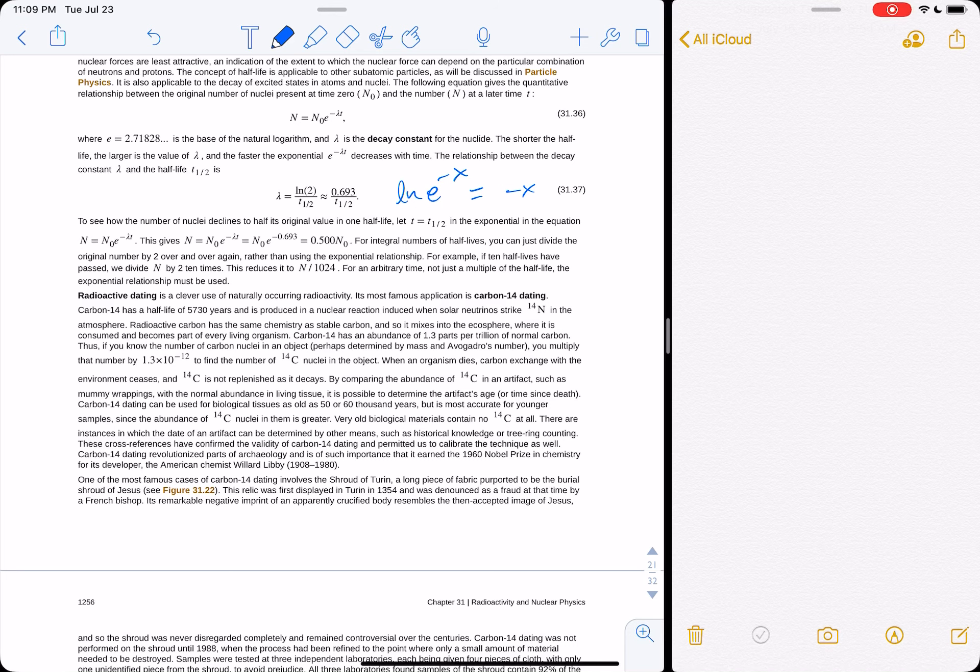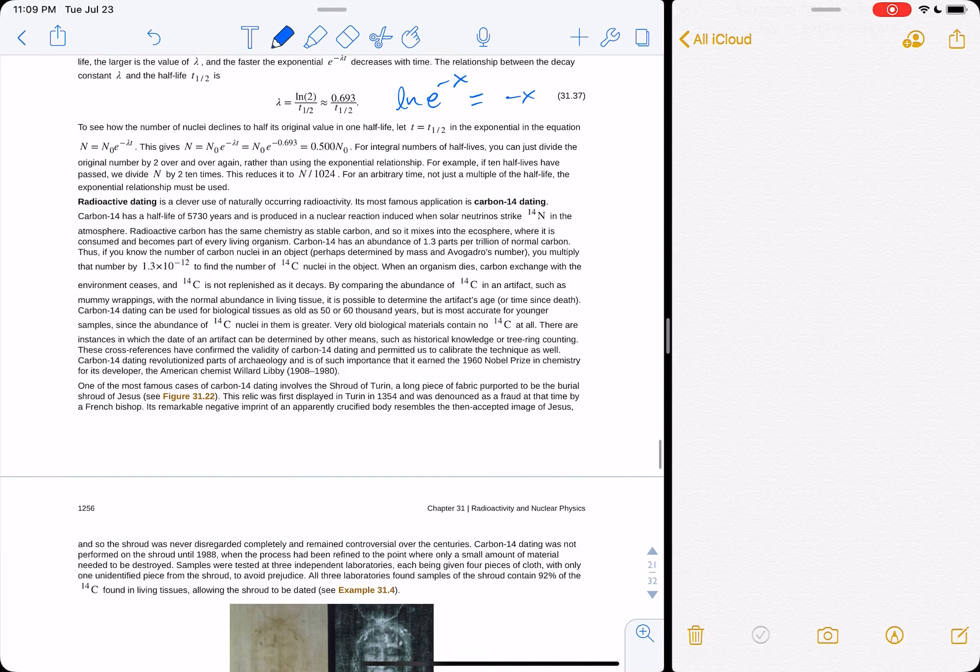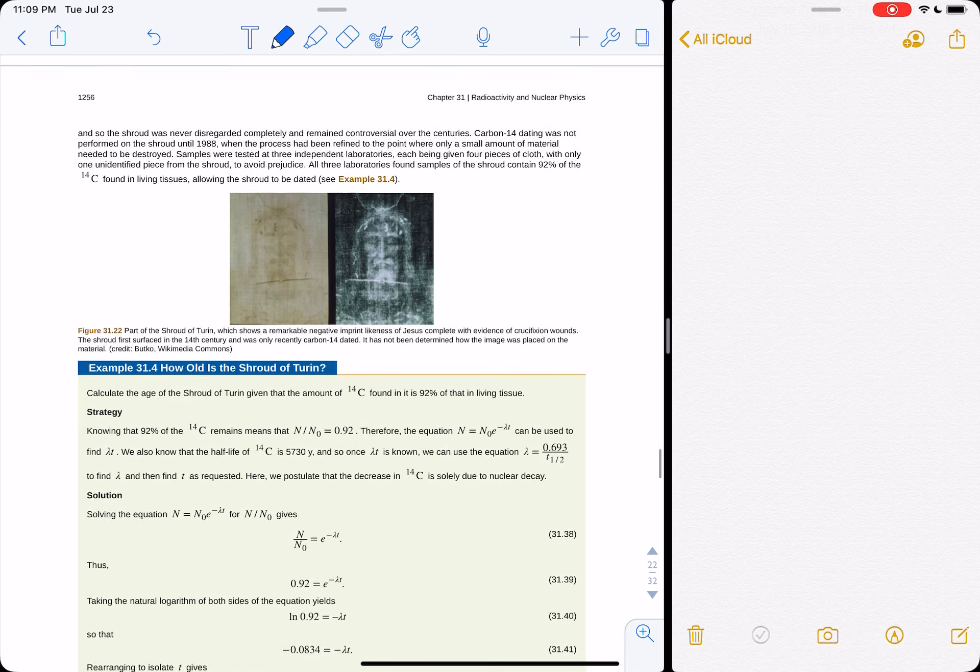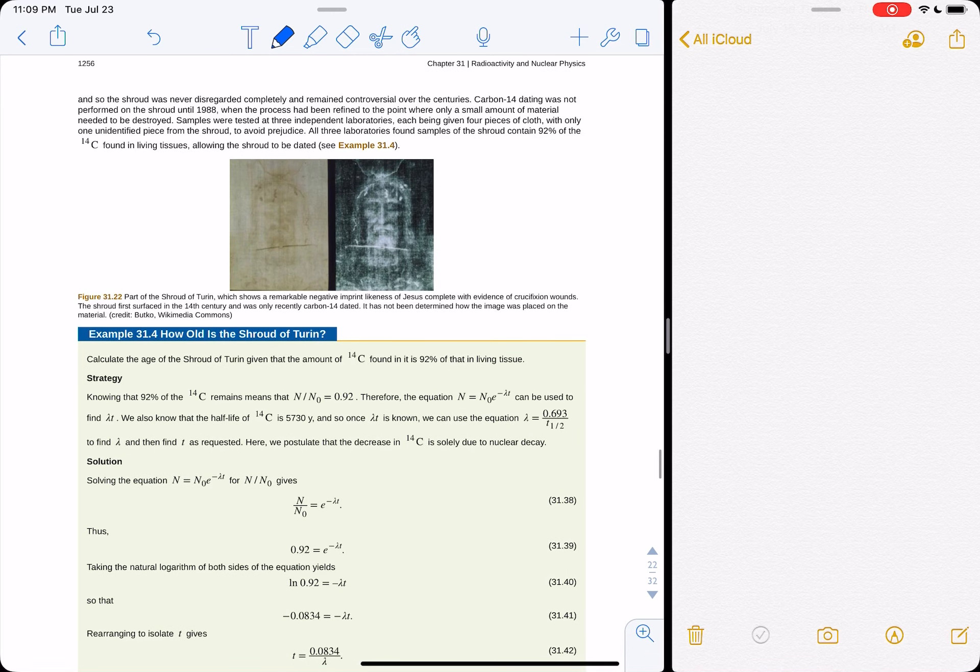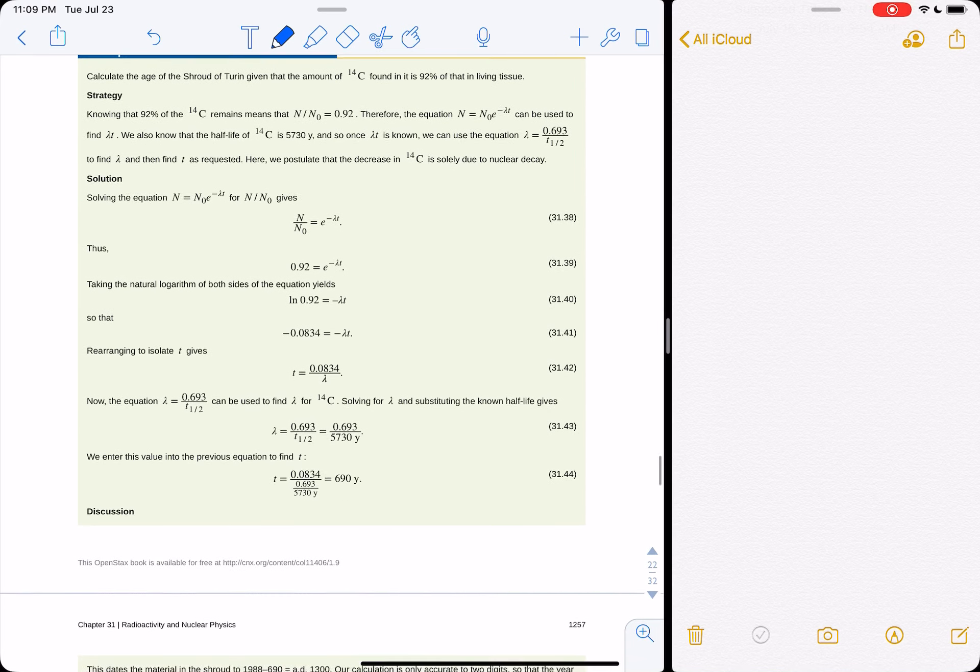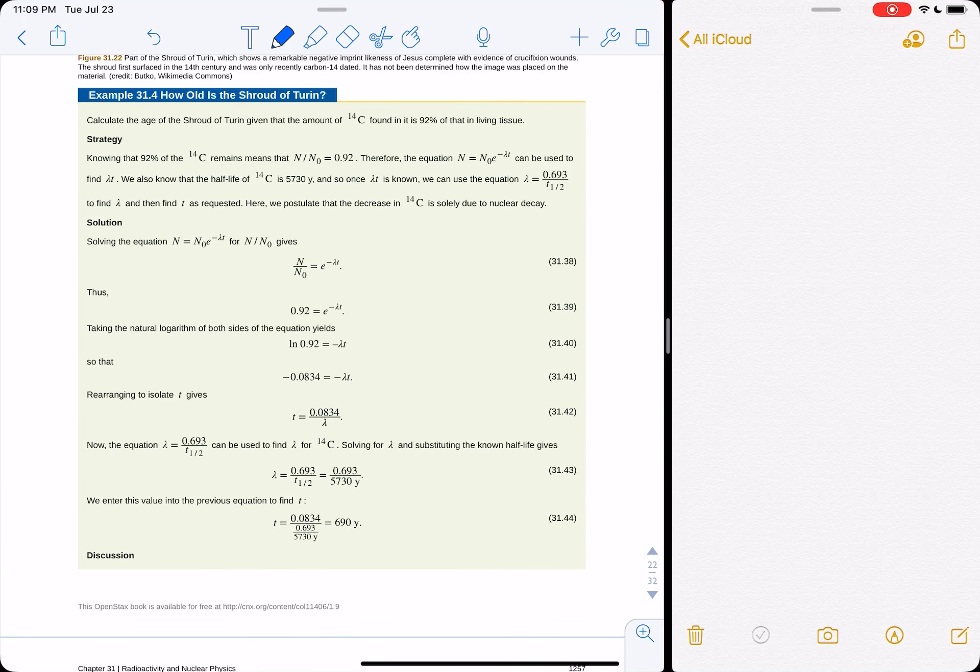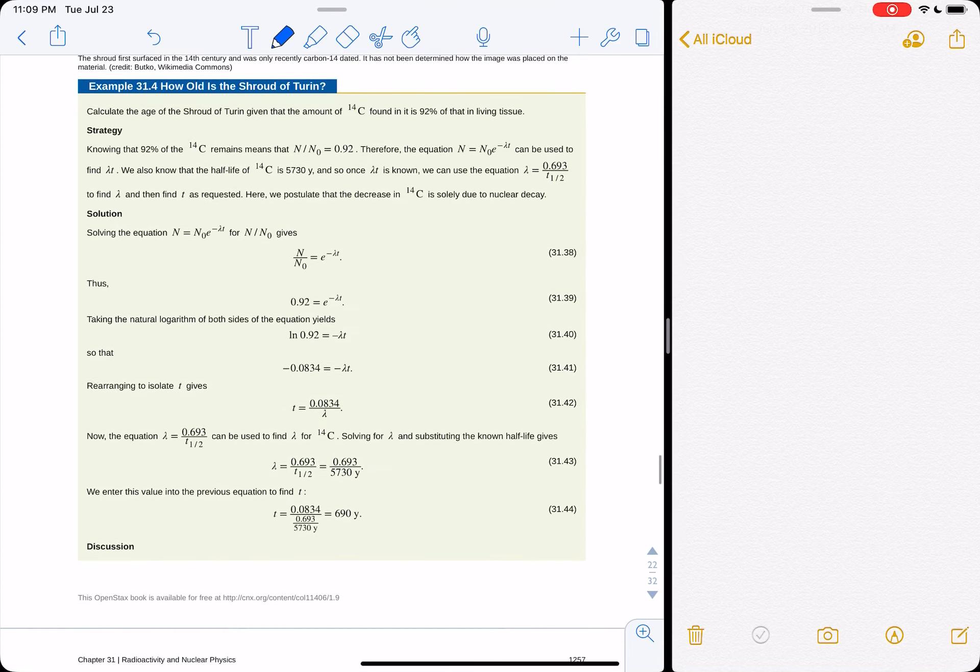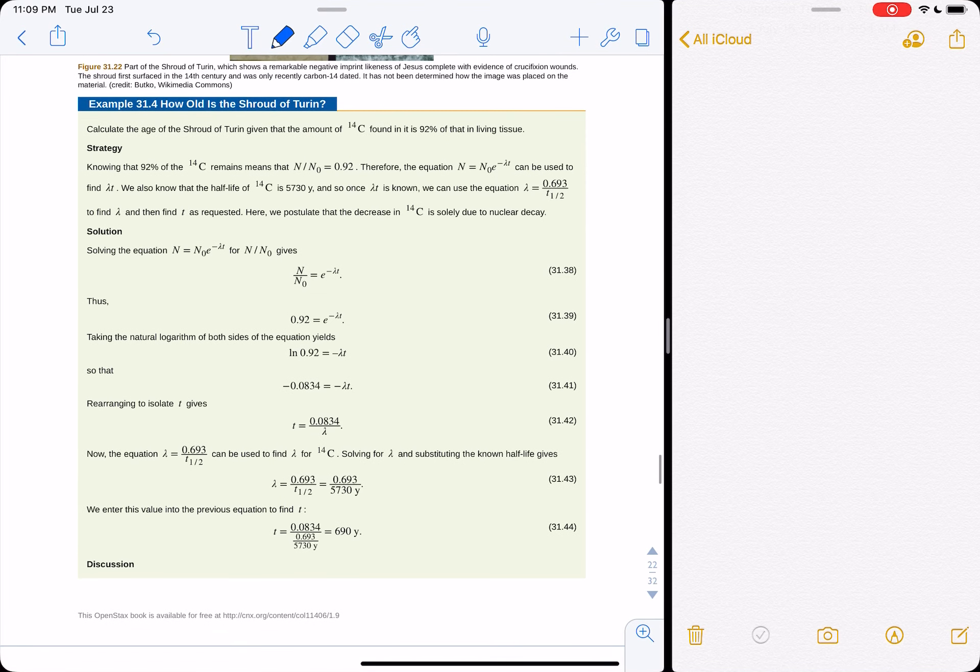The Shroud of Turin was one of the famous things that was like, well, not maybe as old as it claims to be. Okay, so, so there's this, yeah, it's only about 690 years based on measuring the carbon there. So let's go through this example just because it's a good one.